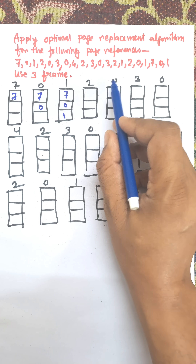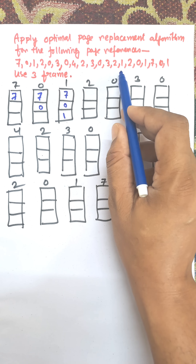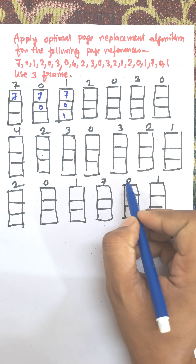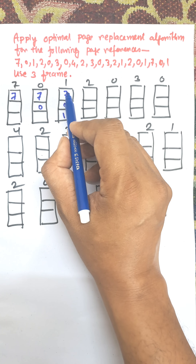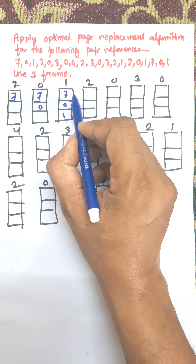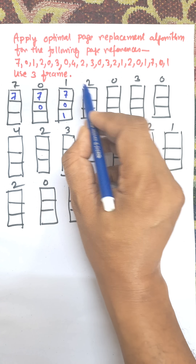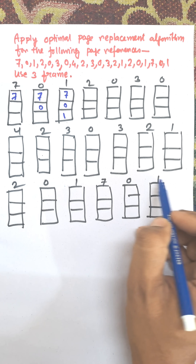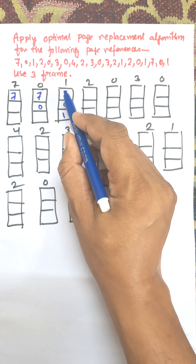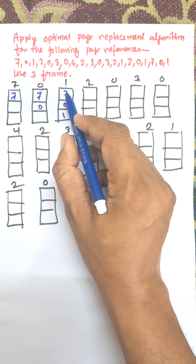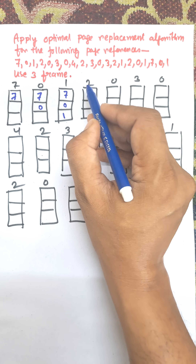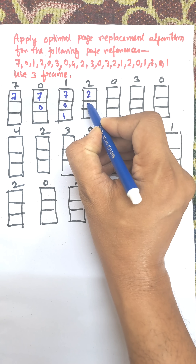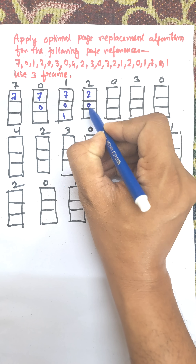Once 0 is found ahead, there is no need to search for 0 again. Similarly, once 1 is found ahead, no need to search for 1 again. So 7 is the last element — 7 is replaced by 2, giving us frames 2, 0, 1.